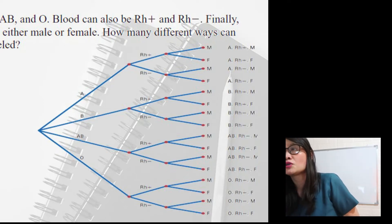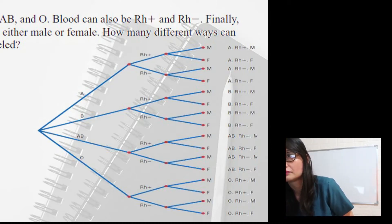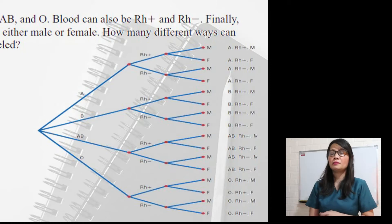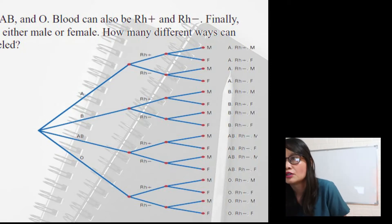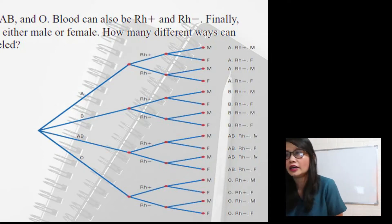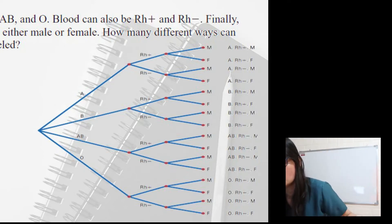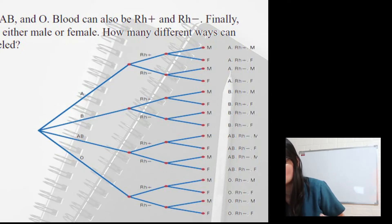How many possible outcomes do we have? Just simply count — there are 16. So a donor of type A blood with RH positive, then male, is the first outcome, and so on and so forth, giving you 16 total outcomes.